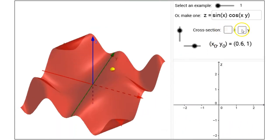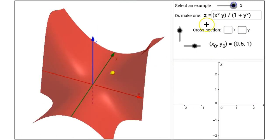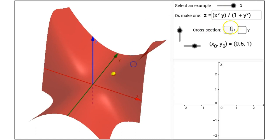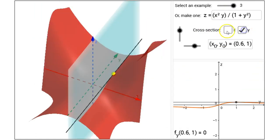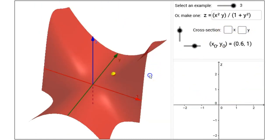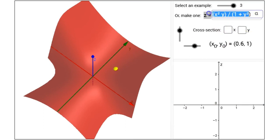In this interactive figure, there are three examples that you can select from using the slider at the top. And for each of these, look at the cross-sections and get a sense of the partial derivatives. And of course, you can also type in your own functions as well.